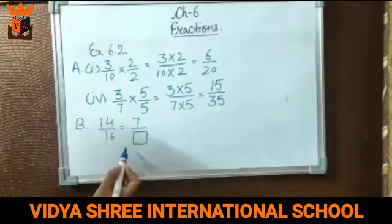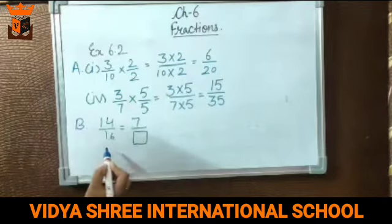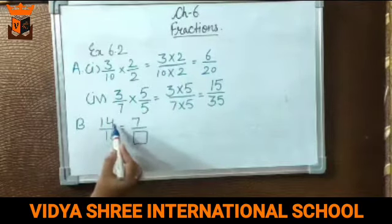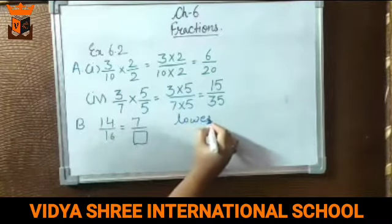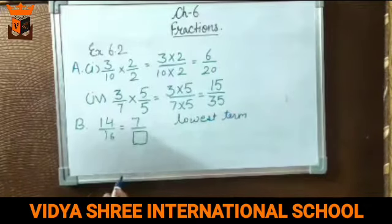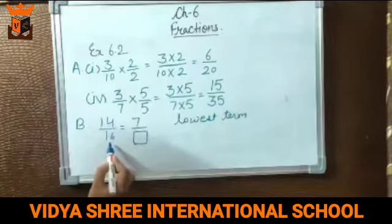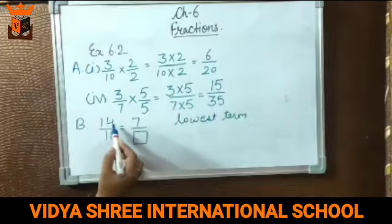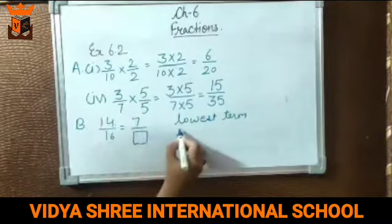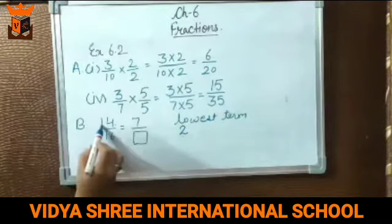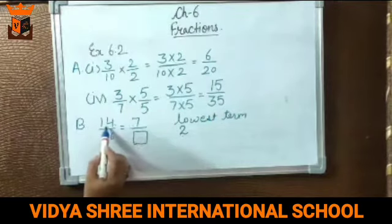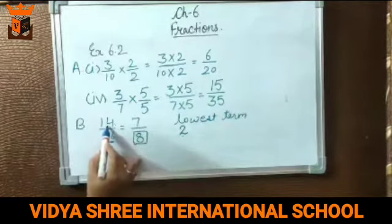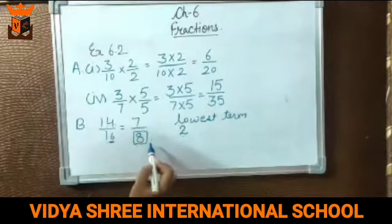Part B of exercise 6.2 is: fill the equivalent fraction in the blanks. Humein given blanks mein equivalent fractions fill karni hain. So for 14 by 16, when you reduce it to the lowest term, we need to find the number which can completely divide both 14 and 16. 2 is the common number which can divide 14 and 16. 2 goes into 14 seven times, and into 16 eight times. So dividing 14 by 2 and 16 by 2, we get 7 by 8.